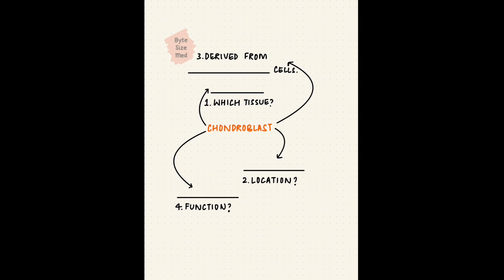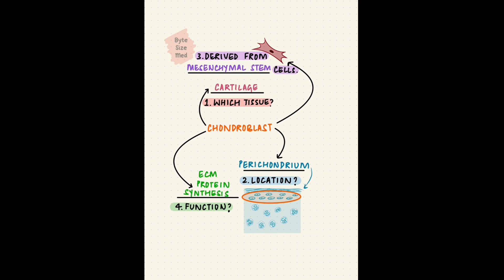The chondroblast is located in cartilage, which is connective tissue. The chondro in it tells you that chondro is cartilage. It's located in the perichondrium. The perichondrium has an outer fibrous layer and an inner cellular layer. The inner cellular layer has those chondroblasts. They are perichondrial cells. And they form from mesenchymal stem cells. They synthesize proteins for the extracellular matrix. That's the matrix that surrounds the cells. Chondroblasts are needed for cartilage repair, maintenance, and growth.